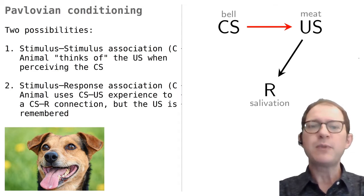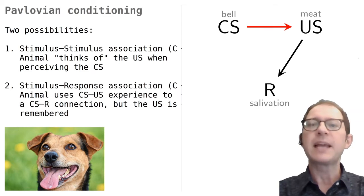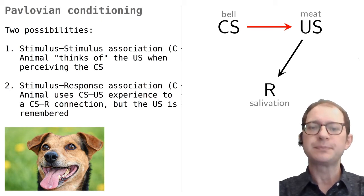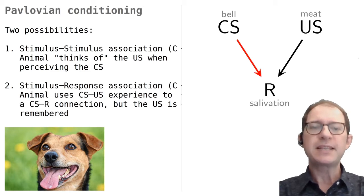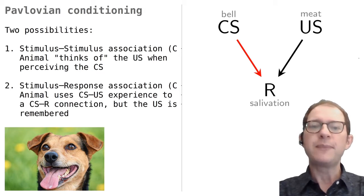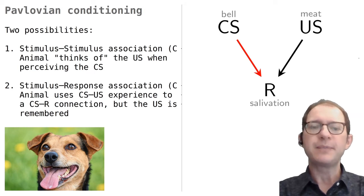Representation is the psychologist's way of saying something like mental image or something that comes to mind. The representation of a stimulus is whatever happens in the brain when the dog perceives that stimulus. The other possibility is that the CS gets connected directly with the response. In this view, the dog would not think of meat when it hears the bell.